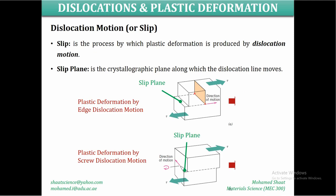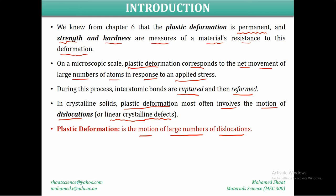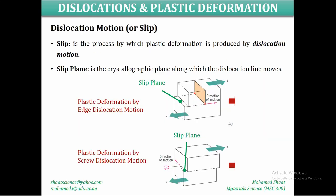Since the focus is on dislocation motion, let us describe how these dislocations move inside the material microstructure, indicating plastic deformation. The dislocation motion — also called slip — is the process by which plastic deformation is produced by dislocation motion.